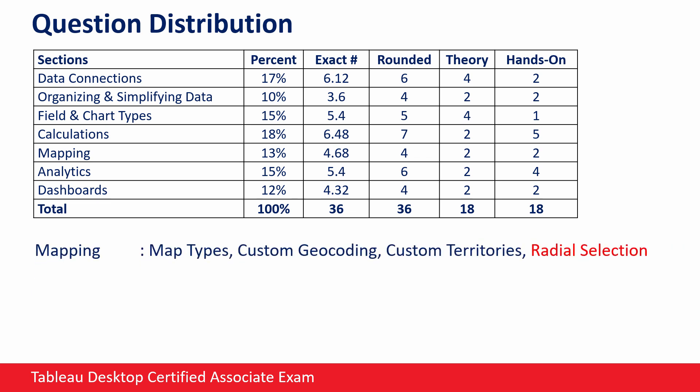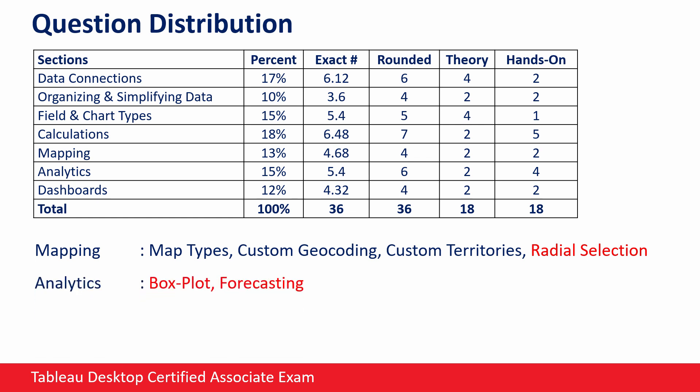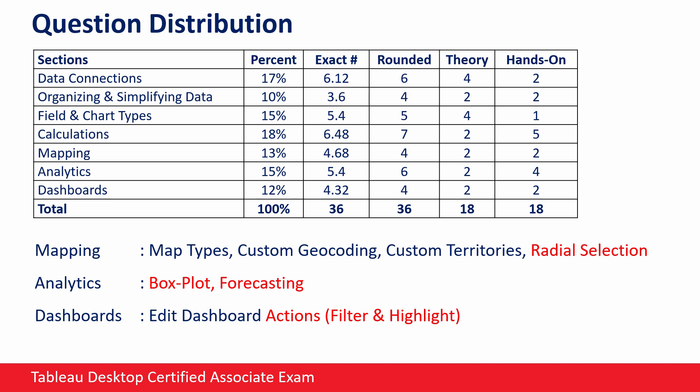For mapping, you have to know different map types, custom geocoding, custom territories, and the map toolbar — these topics are a must. You also have to know the available selection tools; the radial selection tool is extremely important. For analytics, you will get many hands-on questions from this section — all topics are equally important, but you have to spend extra time on box plots and forecasting. For dashboards, you don't create a fancy dashboard in the exam, but you should know how to edit an existing dashboard. You have to know how to add and edit dashboard actions — filter and highlight actions are extremely important. Keep in mind these numbers are approximate — it can be one less or one more, but it gives you an idea about the importance of each section.